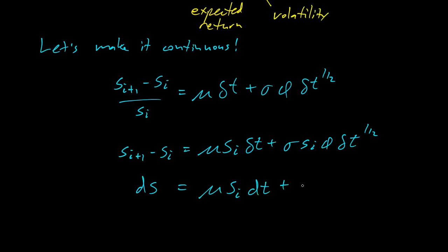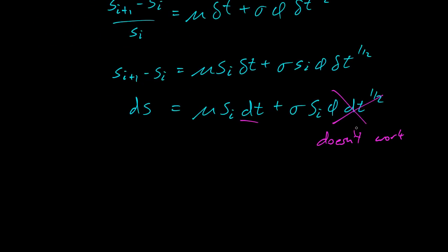And now we'd like to say that we can just do dt to the 1 half, but that doesn't work. So this part here doesn't work. What's the problem? The problem is that dt to the 1 half will always dominate dt. So as a differential equation, it's not going to work out. So what's the solution?